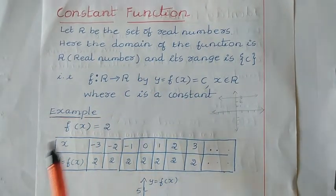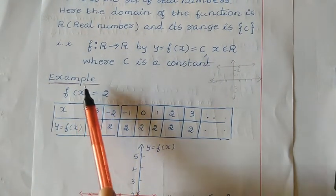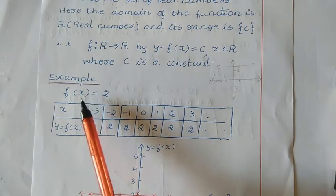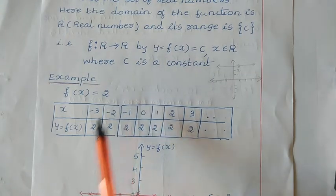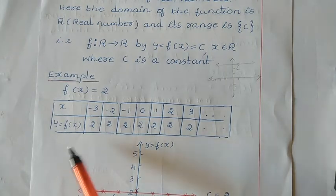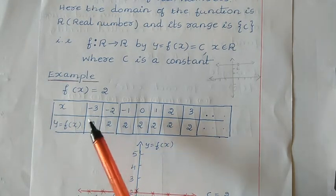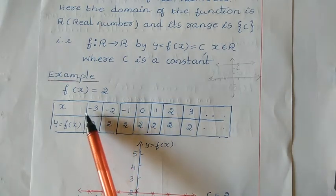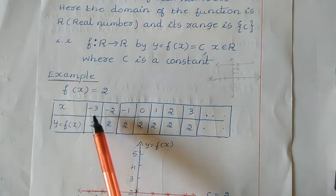For example, f of x is equal to 2 is taken. This is a function where whatever the input value you give for the domain values, you are going to get the same answer, that is the value 2, which is a constant value. If I represent this function using a table, let us take x as well as y. The y is nothing but f of x. I will consider some values here — negative as well as positive values.